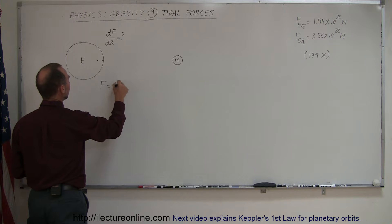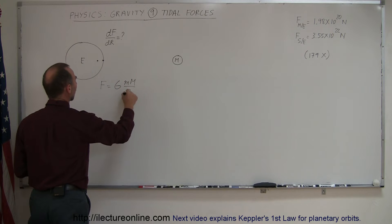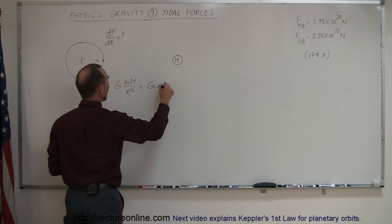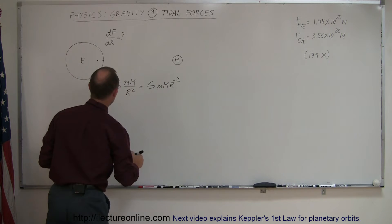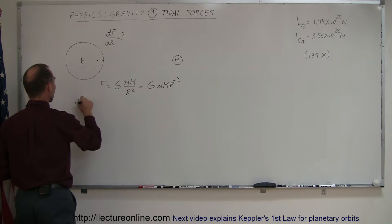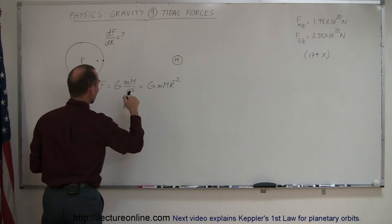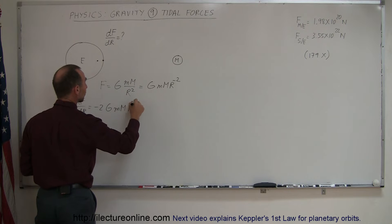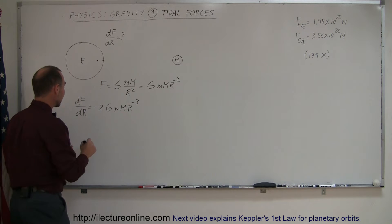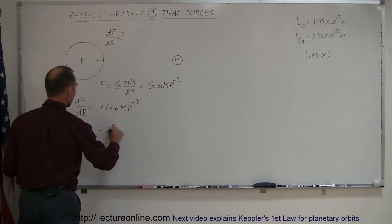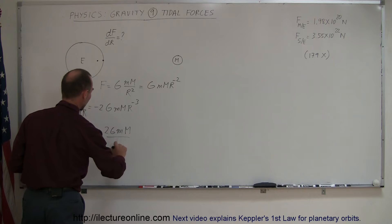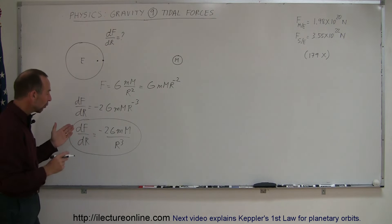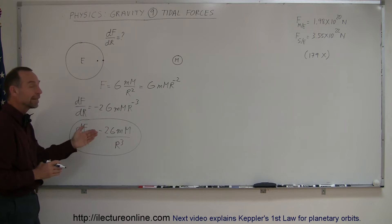If F is equal to G times little M times big M over R squared, we can rewrite that as G times little M times big M times R to the negative two power to take the derivative more easily. The dF/dR is therefore equal to: bring down the exponent, minus two times G times little M times big M times R to the exponent minus three. Rewriting that, dF/dR equals minus 2GM·m over R cubed. So you can see that the rate of change of the force with respect to distance is dependent on one over the radius cubed.